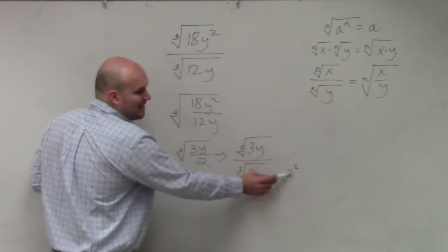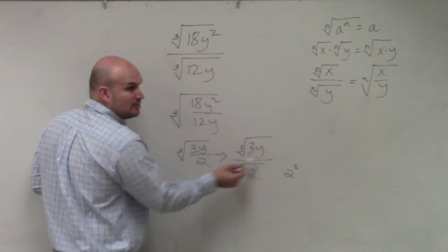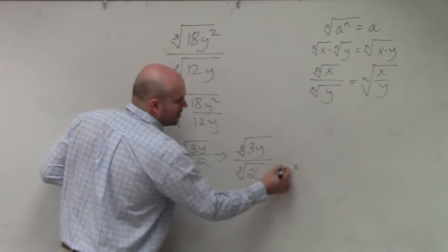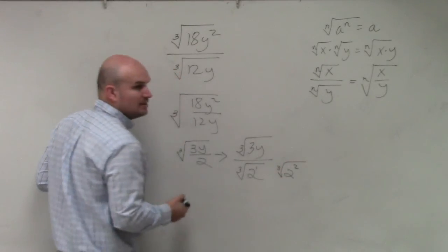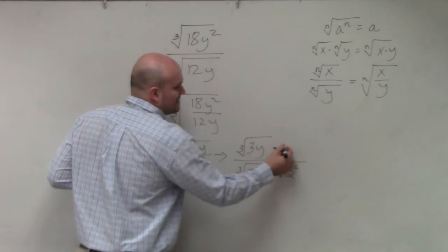So therefore, if I want to multiply this times this, I need to make sure these are the same radicals. So therefore, I need to multiply this by the cube root of 2 squared. And whatever you do in the denominator, you have to do in the numerator.